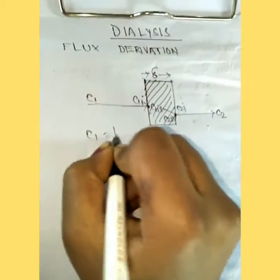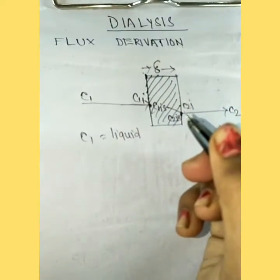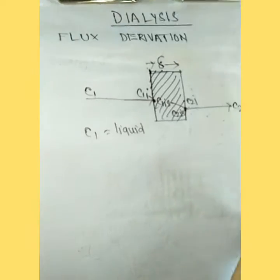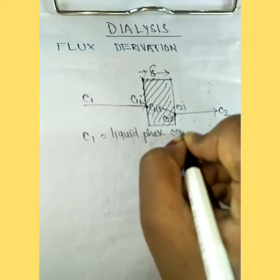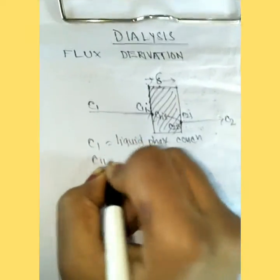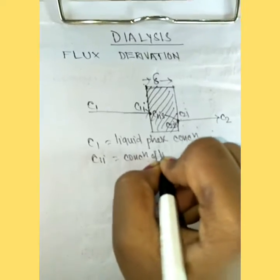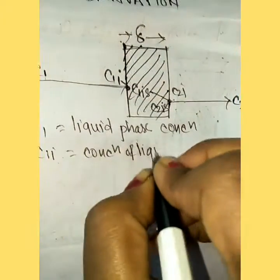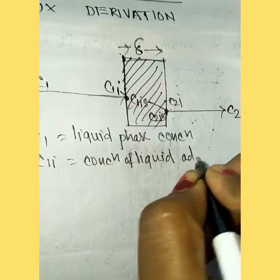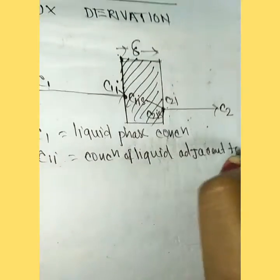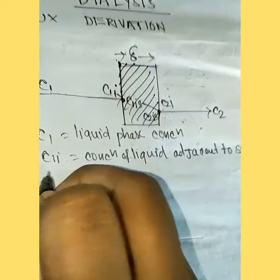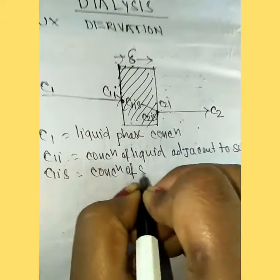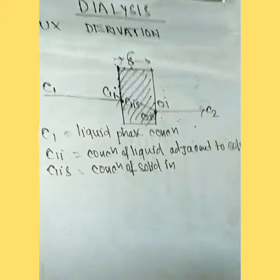C1 is liquid phase concentration. C1I is concentration of liquid adjacent to solid. C1S is concentration of solid in solute. C2 is final outgoing liquid phase concentration.